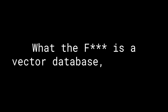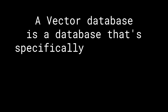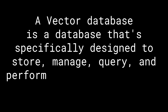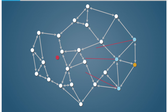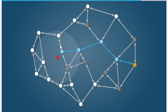What is a vector database exactly? A vector database is a database that's specifically designed to store, manage, query, and perform operations on large collections of vectors. They use specialized indexing and search algorithms like approximate nearest neighbor search for fast and accurate searching, filtering, and ranking of vectors.